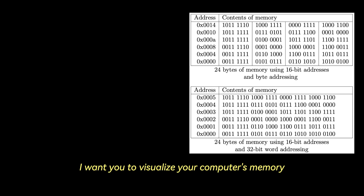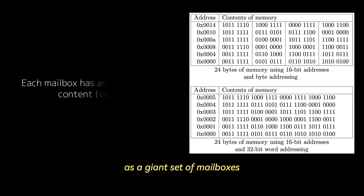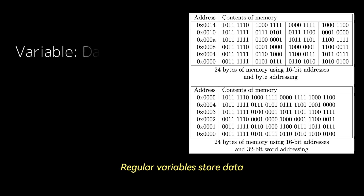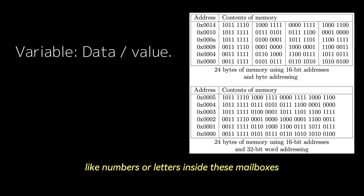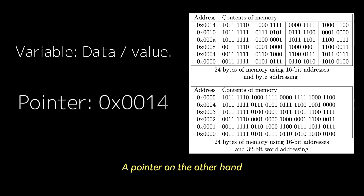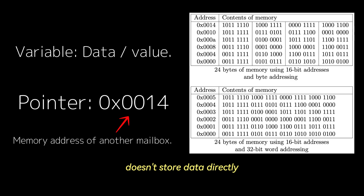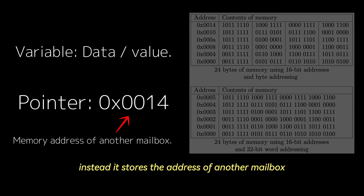I want you to visualize your computer's memory as a giant set of mailboxes, each with a unique address. Regular variables store data like numbers or letters inside these mailboxes. A pointer, on the other hand, doesn't store data directly. Instead, it stores the address of another mailbox.